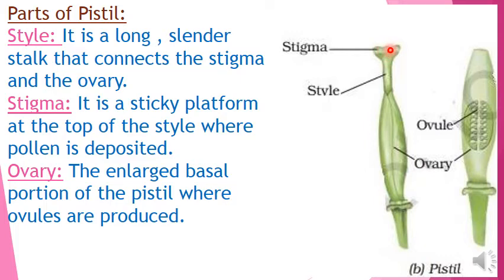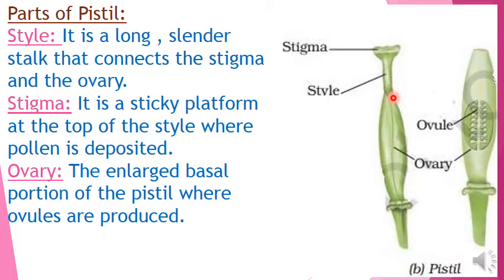That yellow colored powder-like structure falls on the stigma. It has a hole which is connected with the style. Style is a long slender stalk that connects the stigma and the ovary. Stigma is the upper part of the female organ whereas ovary is the last part in which ovules are produced. Stigma collects the pollen grains and sends them to the style, whereas style passes the pollen grains to the ovary. Ovary is the enlarged basal portion of the pistil where ovules are produced.